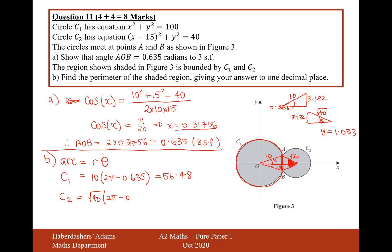So for arc C2: root 40 times (2π minus 1.033), which gives 33.21. Adding the two arcs together: 56.48 plus 33.21 equals 89.7. There are no units on this question, so the perimeter is 89.7.